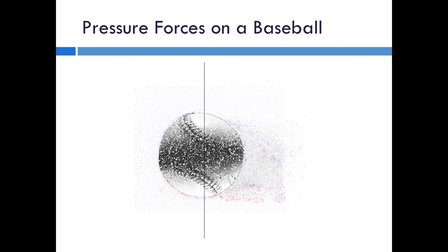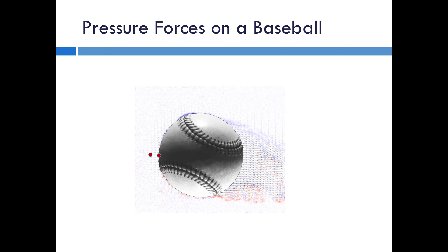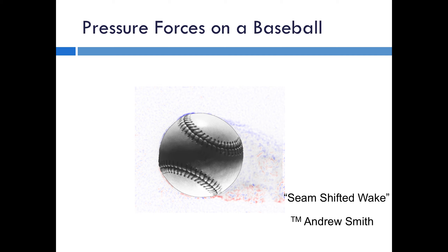Now if the ball is oriented a little differently and we look at that same process, one side is separating before the other. That means there's a net pressure difference between the two sides of the ball and a force on the ball — that's what we're focusing on here. We call it a seam-shifted wake. It's been called a 'laminar flow effect' by a lot of folks, but we disagree that this has anything to do with laminar flow. I should note that this is somewhat of a joke, but Andrew Smith, my grad student, came up with that term and he'd like to trademark it — so if you use it, you need to send him a check.